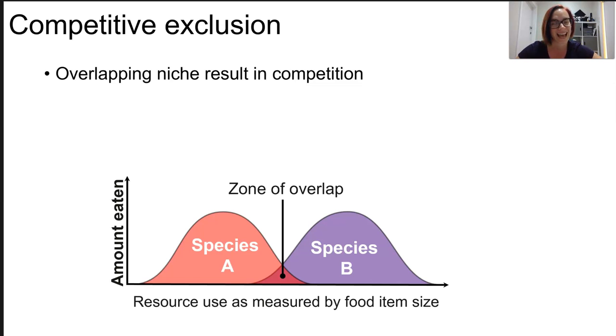So that weaker species has to make a compromise if it's been bested essentially and it might have to find a new source of food, a new nesting location, a new time to feed. This is competitive exclusion. The weaker species has been excluded from this part of the niche.